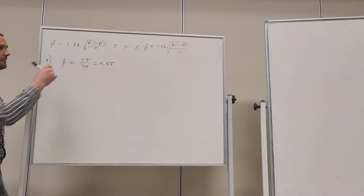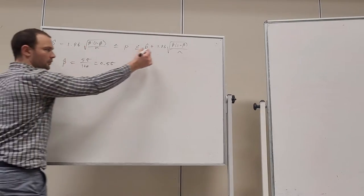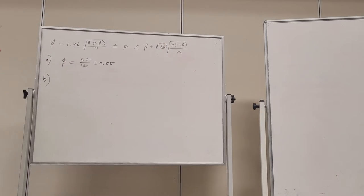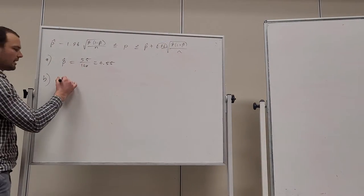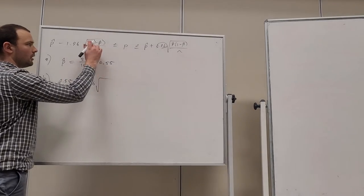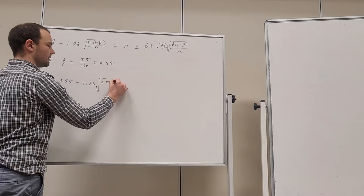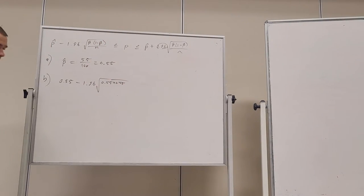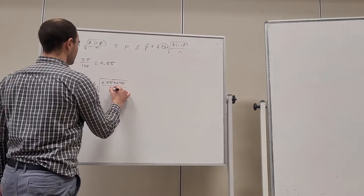We're going to write the 95% confidence interval. We know it's 95% because of these values of z alpha on 2, 1.96. Remember, that number can change, so you can have different levels of confidence. So, 95% confidence interval, we're going to have 0.55 take 1.96 times the square root of 0.55 times 0.45. Okay, 1 take P, or Q, on n, n is 100.